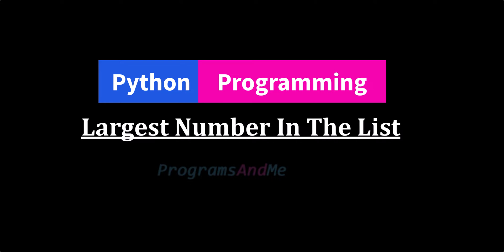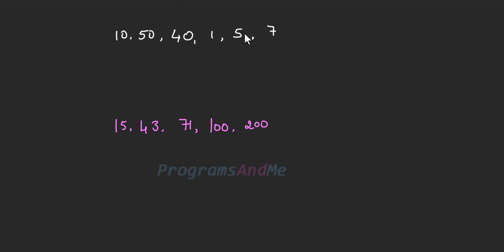Hello and welcome to my YouTube channel. Today in this tutorial we will learn how to write a Python program to find the largest number in the given list. The input is a list of integer numbers and the output is the largest number present in that list. For example, here we have a list of numbers and we need to find the largest number — here the largest number is 50, so the output of our program is 50.